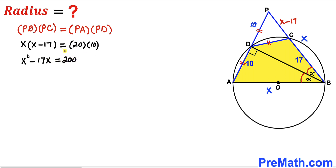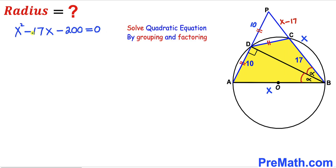Moving 200 to the other side, we arrive at the quadratic equation: X squared minus 17X minus 200 equals 0.